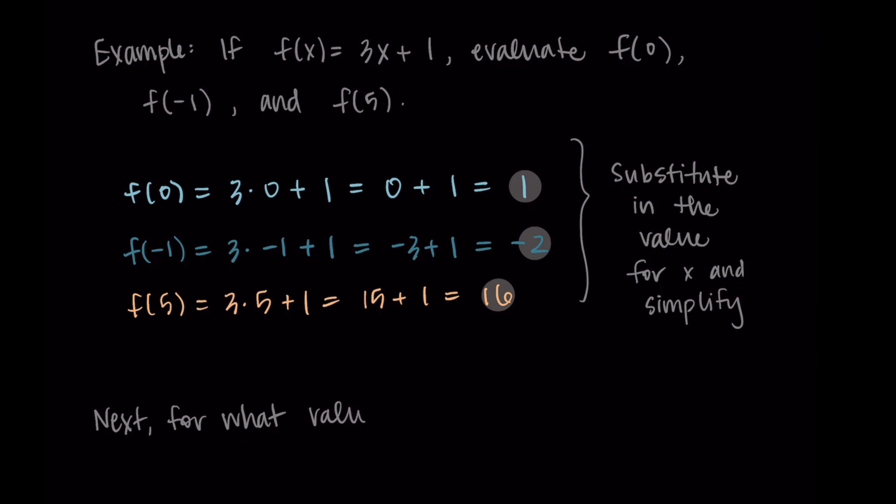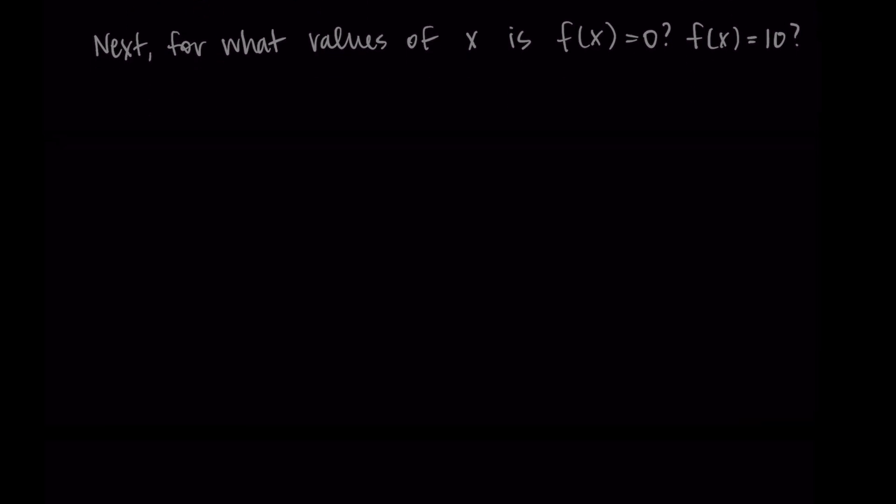Now I'm going to ask us, using this same function, for what values of x is f(x) = 0 and f(x) = 10. This is asking what input gives 0 or 10 as an output. So we want to take our function and set it equal to the value. For us, that's 3x + 1, and we want to set it equal to what we're looking for: 3x + 1 = 0, or 3x + 1 = 10. And we're solving for x.